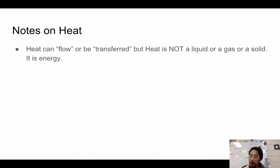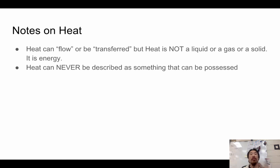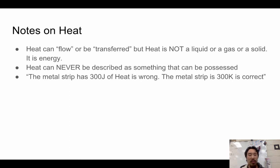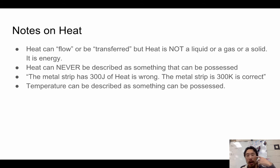A note on heat: heat can flow or be transferred, but heat is not a liquid, gas, or solid. Heat can never be described as something that can be possessed — you cannot own heat. Saying 'a metal strip has 300 joules of heat' is absolutely the wrong way to describe it. Instead, say the metal strip is 300 K. Temperature is something that can be possessed — it is a descriptor.